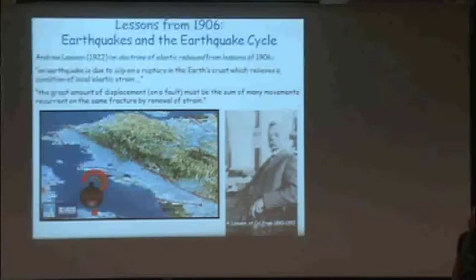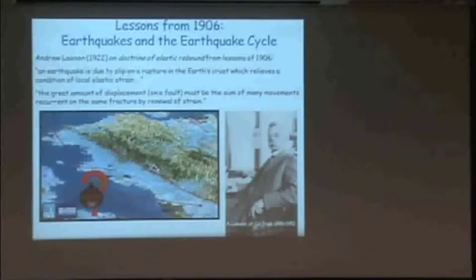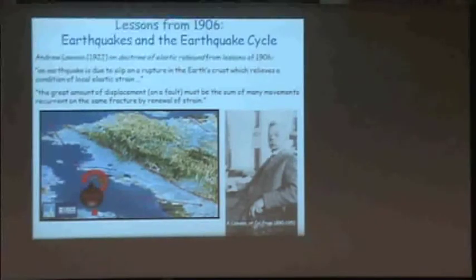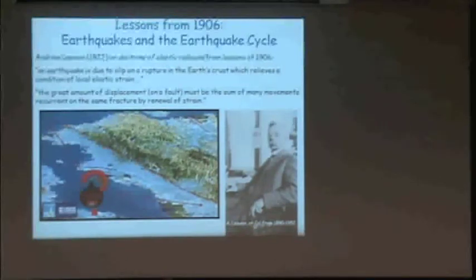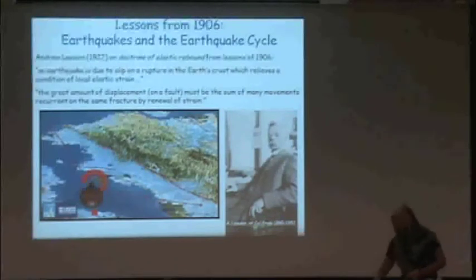One of the big lessons from the 1906 earthquake was that strain develops over time — stretching and stretching — and at some point, like a stretched rubber band, it becomes too much and the ground ruptures. They also figured out that the displacement from one earthquake was not enough to account for offsets in geological features along the fault, so there must be many movements recurring on the same fracture by the renewal of strain.